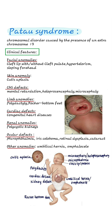Sloping forehead. Skin anomaly: cutis aplasia, which is the congenital absence of skin in a localized area, most often on the scalp. CNS defects include holoprosencephaly, which is the failure of the forebrain to divide, and microcephaly, meaning a small head.